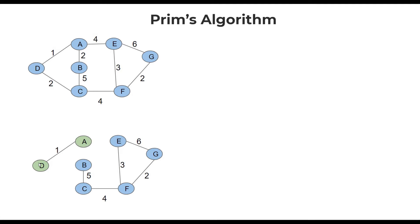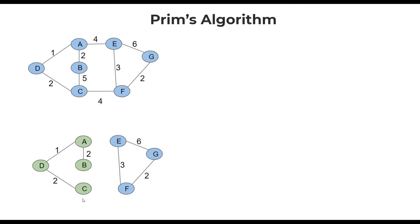Now A and D are part of the spanning tree we are constructing. We need to connect this part to the rest of the graph — we have quite a few options: A could be connected to E, A could be connected to B, or D could be connected to C. Two of these edges have the same weight, so we can pick either of them. Let's pick AB. On attempting to connect this with the rest of the graph, we again have three options and would prefer the one with the minimum weight: DC. Now to connect this with the rest of the graph, we have two options with equal weights of 4. Let's pick AE.